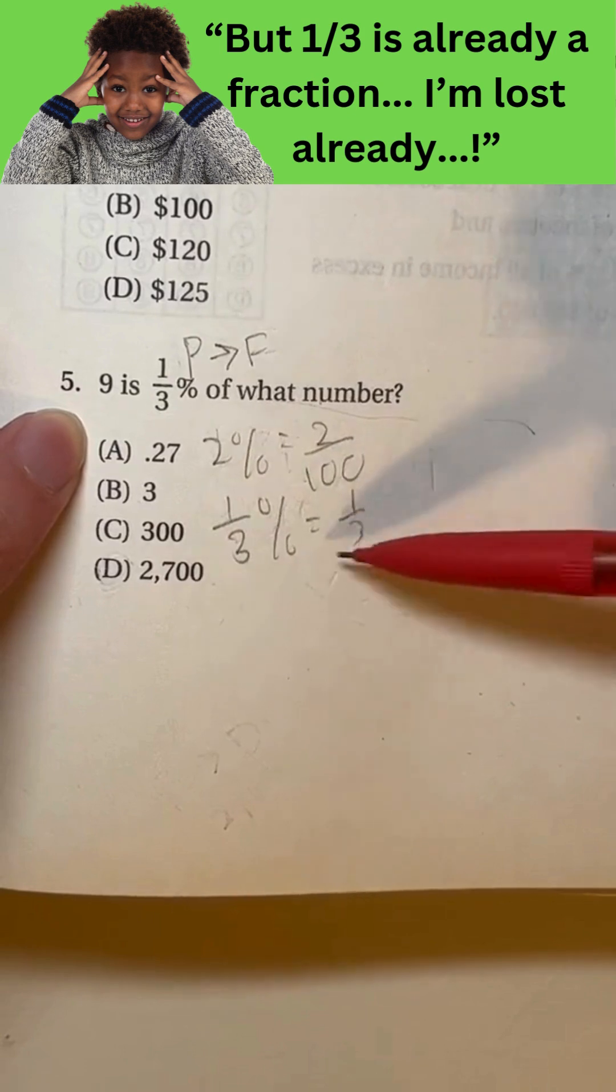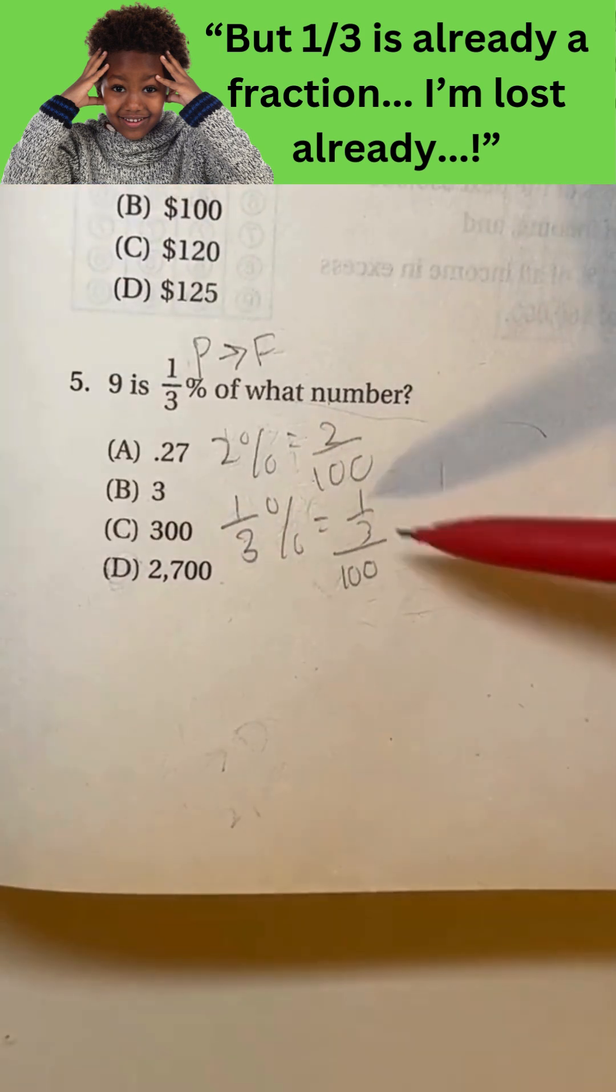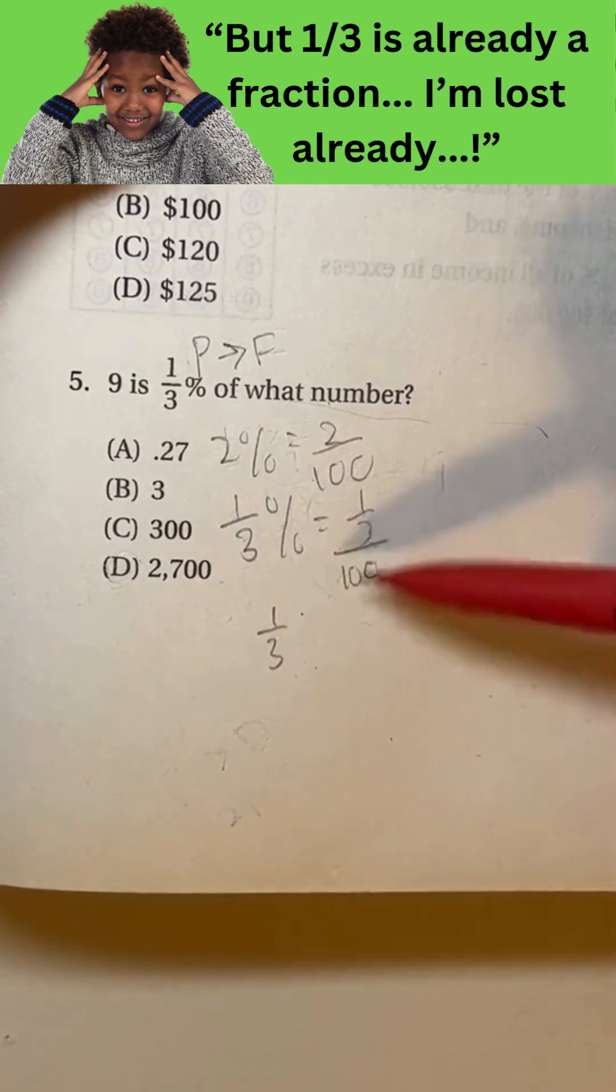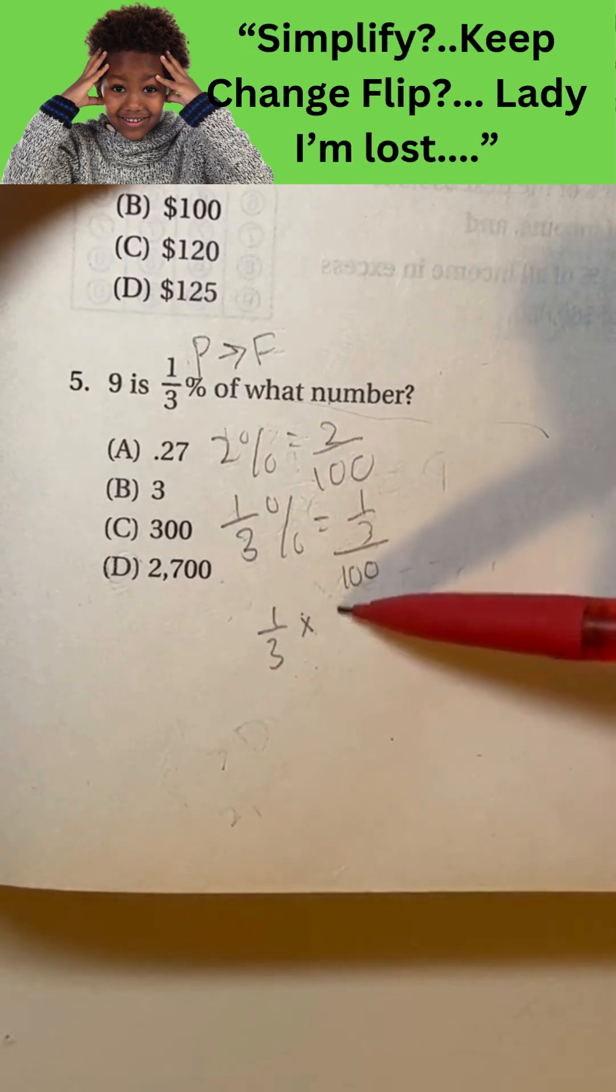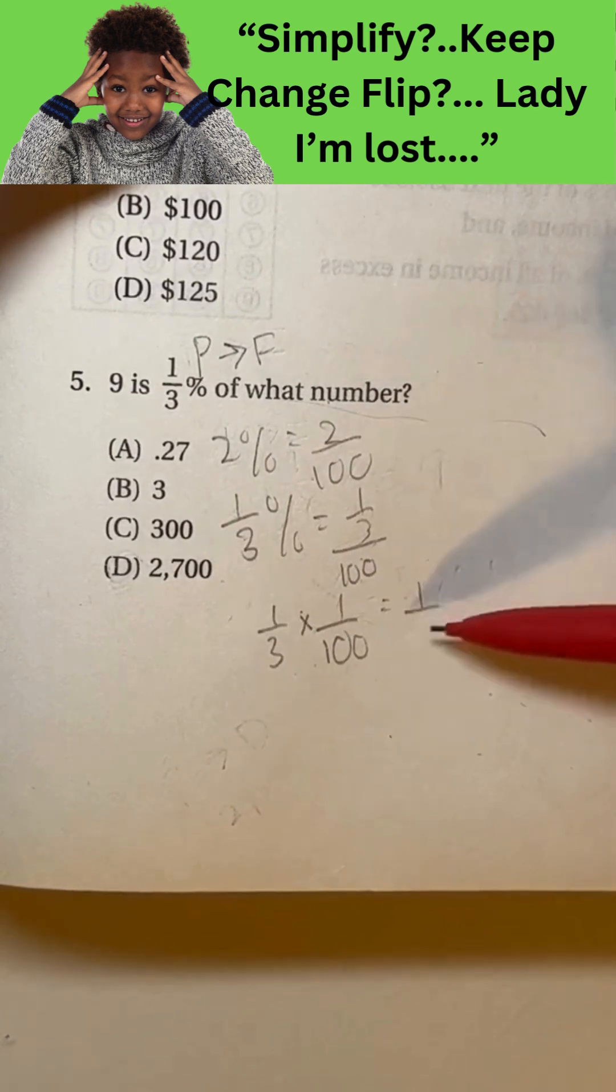we take 1 3rd and put it over 100. This simplifies to, so we do the keep change flip rule. Keep 1 3rd, change division into multiplication and flip 100. Take the reciprocal of it. So it's the same thing as 1 over 300.